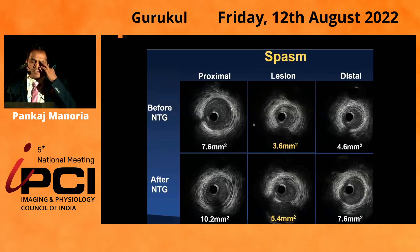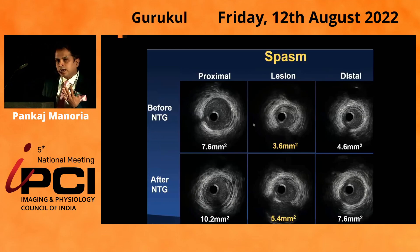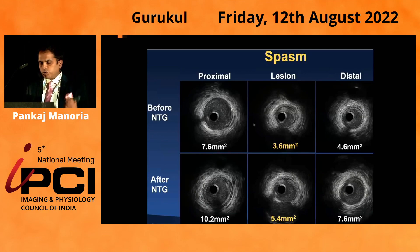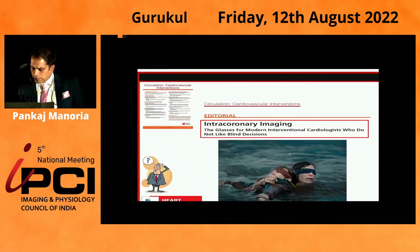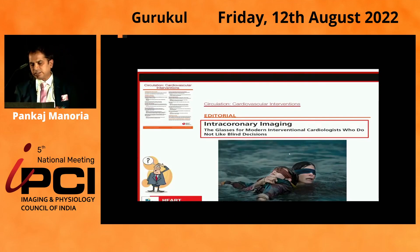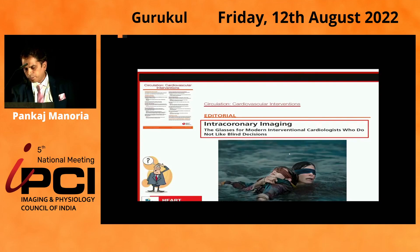Sometimes vessels are in spasm and you can underestimate the size, so it is always better to give NTG before doing IVUS to rule out any spasm. To conclude, intracoronary imaging is the glasses of modern-day interventional cardiologists who do not like to operate blind.